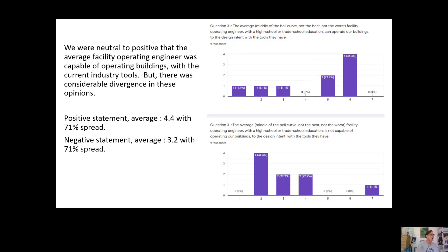But question number three, our average middle of the bell curve, not the best, not the worst facility operating engineer with a high school or trade school education, can operate our buildings to the design intent with the tools that they have. We were overall neutral to positive on this. And so it's 4.4 to the positive statement and a 3.2 to the negative statement. But look at the spread. There's significant spread in both the positive and the negative statement.